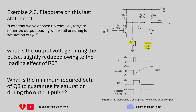The last part of the question is: what is the minimum beta required of Q3 — this BJT over here — to guarantee saturation during the output pulse? These two questions we'll answer towards the end.